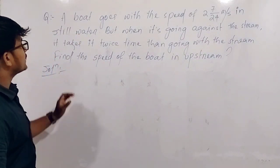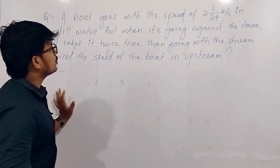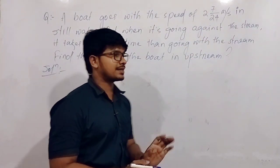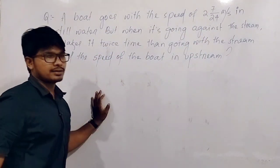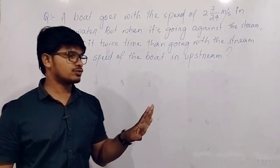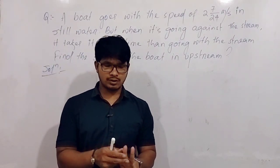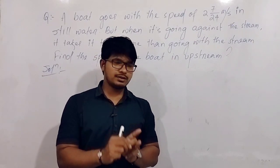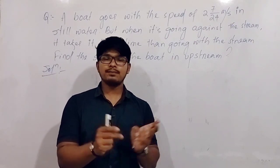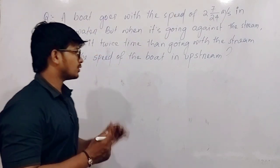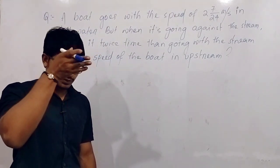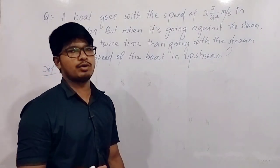So coming to the solution part. A boat goes with the speed of 2 and 7/4 meter per second in still water. That means we know the boat's speed. Now boat in still water speed, boat going with the stream, boat going against the stream. So total x, u and d we call them. Upstream and against the stream, downstream d speed.